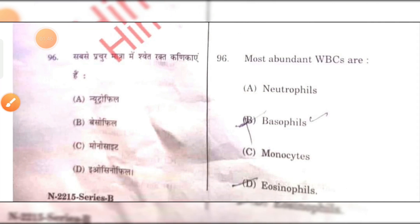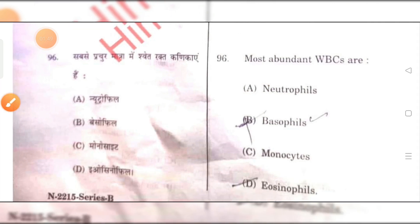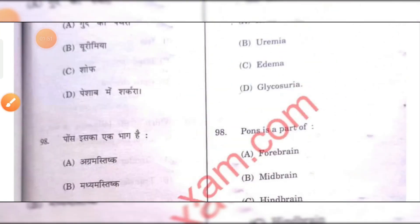The most abundant white blood cell is neutrophil. A is the right answer.